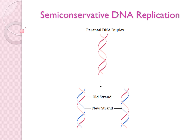Now we will discuss semi-conservative DNA replication with the help of this diagram. Here we show a parental DNA duplex which undergoes unwinding during replication. A new strand is formed on each old single parental strand. This means that in both new DNA duplexes, one strand is parental and one strand is newly synthesized. This is called semi-conservative synthesis — one old strand is conserved and a new strand is synthesized.